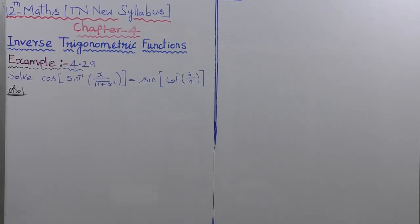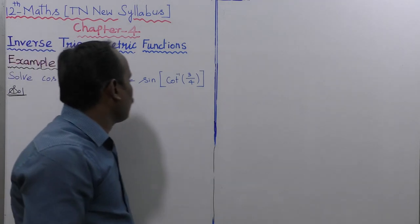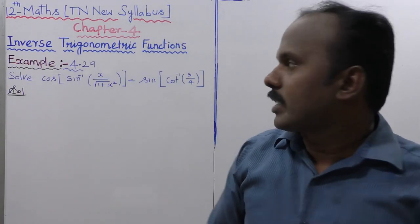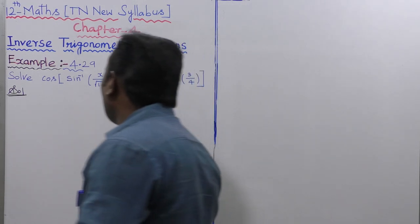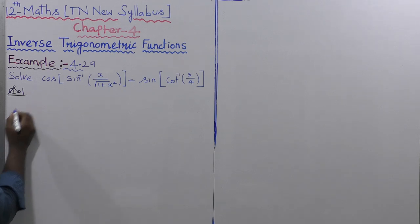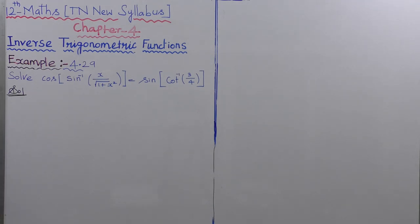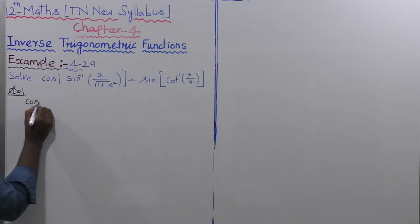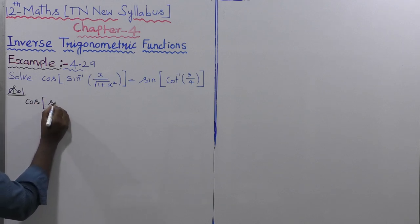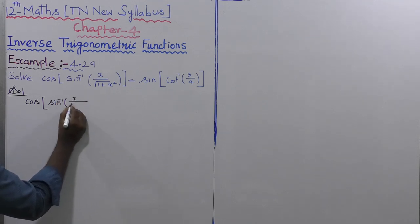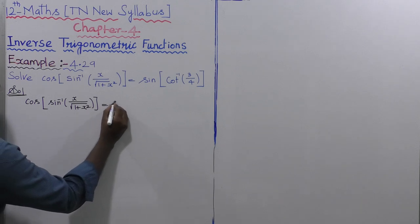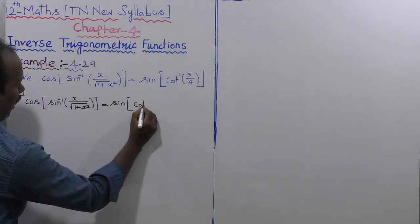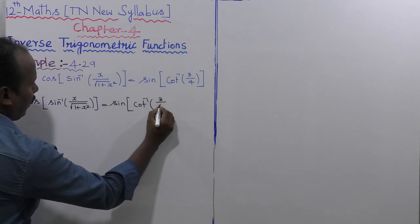Example 4.29: cos of sin inverse of x by root of 1 plus x square is equal to sin of cot inverse of 3 by 4. Let us take the given values — LHS is cos of sin inverse of x by root of 1 plus x square, and RHS is sin of cot inverse of 3 by 4.